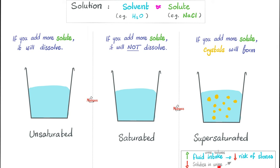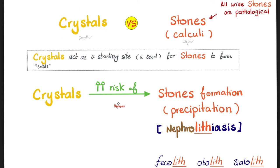We should also try to decrease solutes in the urine — maybe you have too much calcium oxalate, calcium phosphate, or uric acid. Maybe a medication is causing the stones. So we try to decrease solutes while increasing the solvent, water. What's the difference between crystals, stones, and calculi? Stones and calculi are synonymous. Crystals are smaller; stones are larger. Crystals act as a starting site — a seed — on top of which stone precipitation happens. When stones precipitate, this is called kidney stones, or nephrolithiasis.